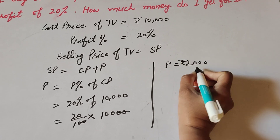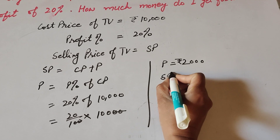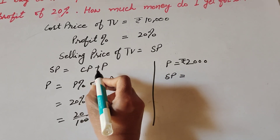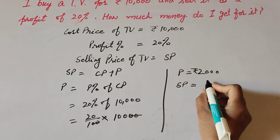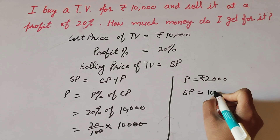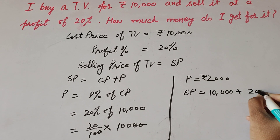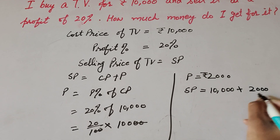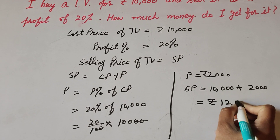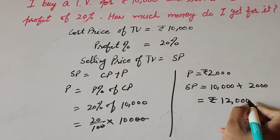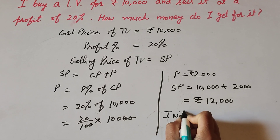So we get profit of 2,000. Now we find the selling price: selling price is equal to cost price plus profit. Cost price is equal to 10,000 plus profit of 2,000, so 10,000 plus 2,000 is equal to rupees 12,000. Therefore, the selling price of the TV is equal to rupees 12,000.